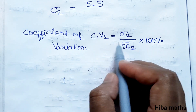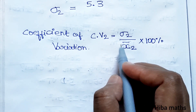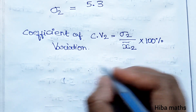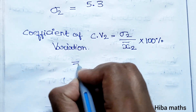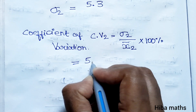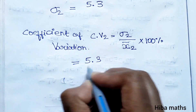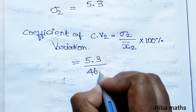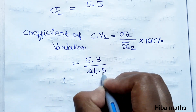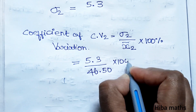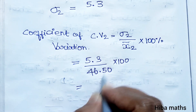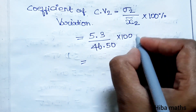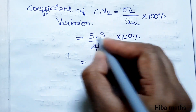Coefficient of Variance CV2 = (standard deviation / mean) × 100. So CV2 = (5.3 / 46.50) × 100.